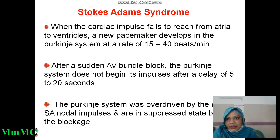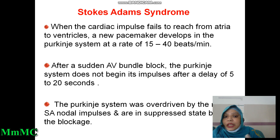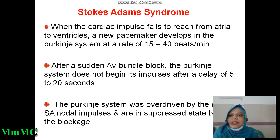Since the AV node is the only pathway for conduction of the atrial impulse into the ventricle, when AV bundle block occurs, a new pacemaker develops in the Purkinje system at a rate of 15 to 40 beats per minute. After sudden AV bundle block, the Purkinje system generates its impulse at this reduced rate, because the AV node or AV bundle is the only pathway for the impulse to reach from atria to ventricle.